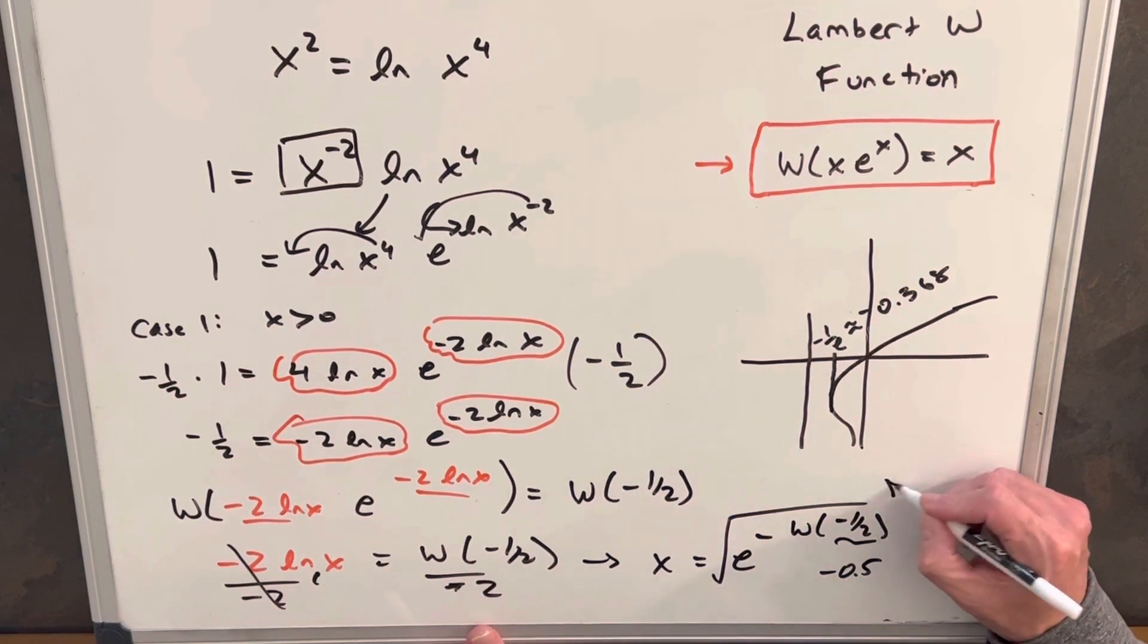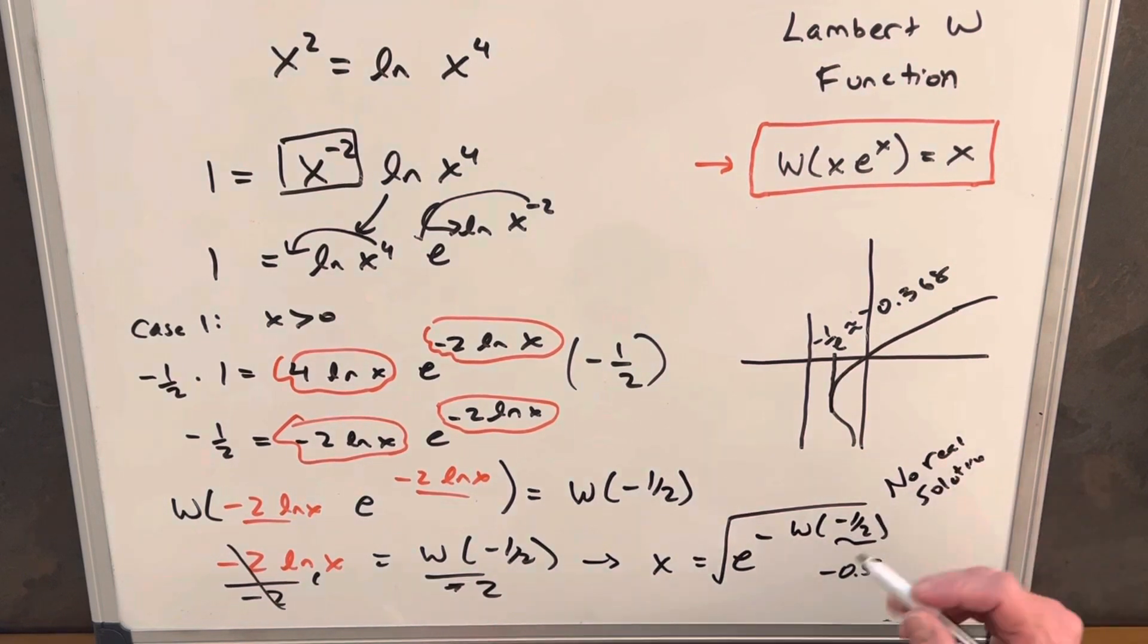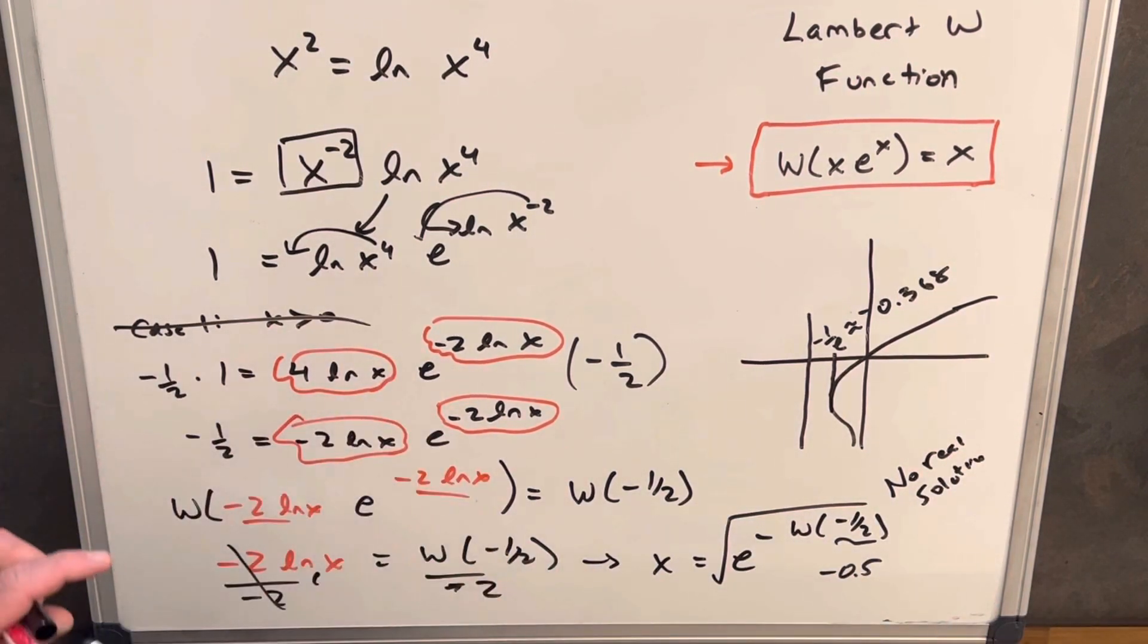So then just for our case 1, we're going to have no real solution. So we'll just reject this case 1 as not going to work for a real solution.